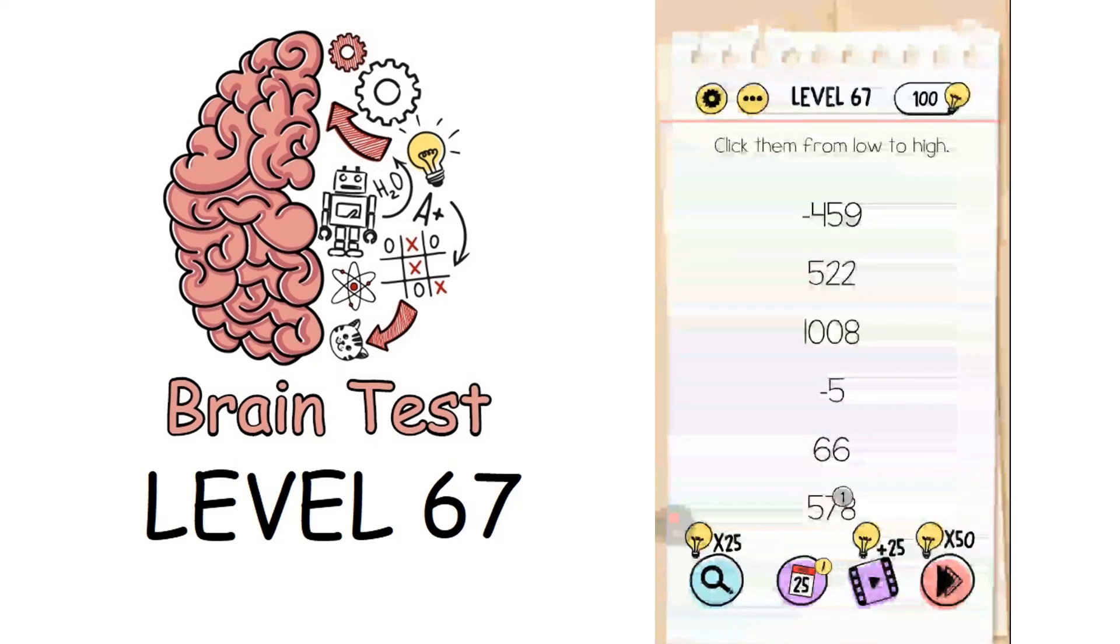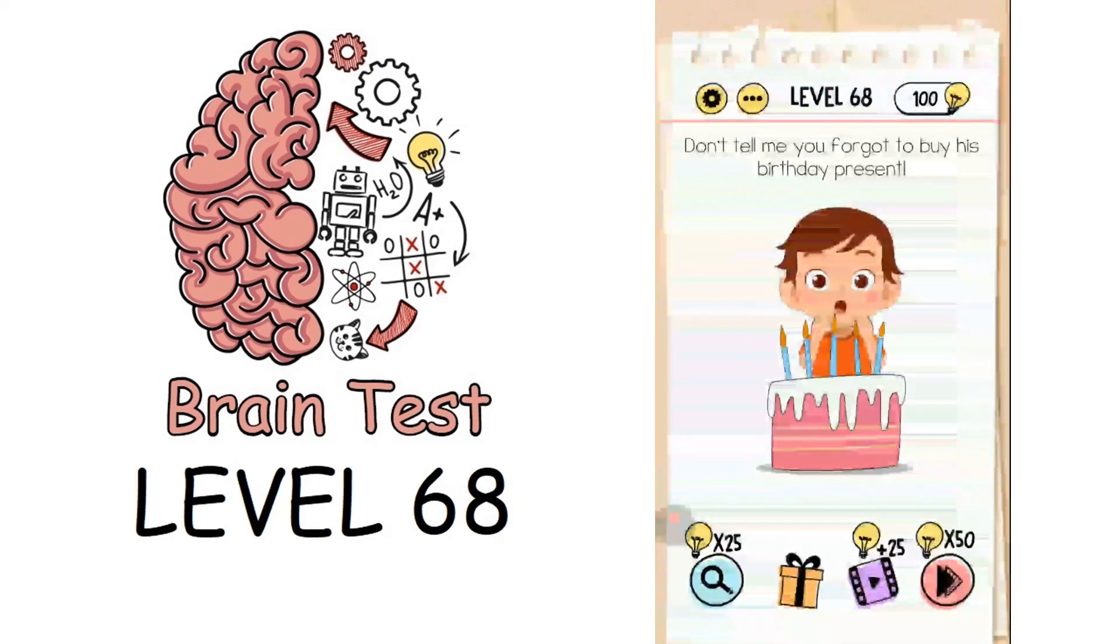Now we're on to level 68: don't tell me you forgot to buy his birthday present. There's a boy and a cake. How can we solve this? There's a gift lying here with the icons and other icons. Take this gift and give it to the boy, and that solves the puzzle.